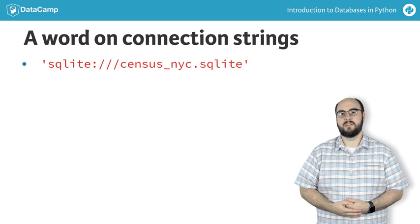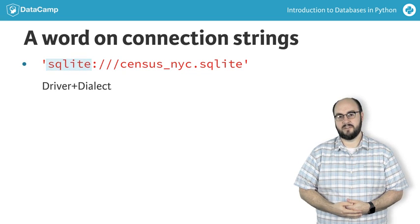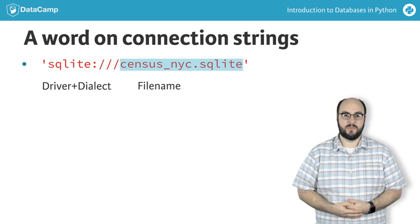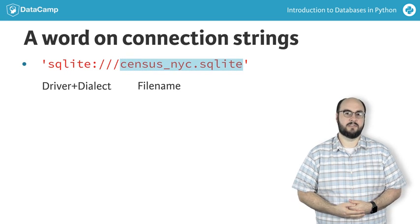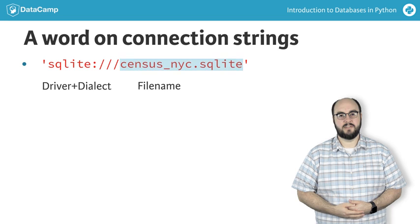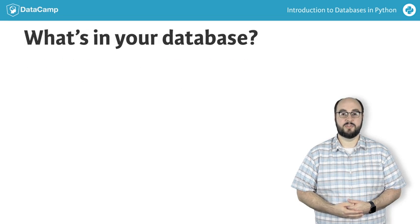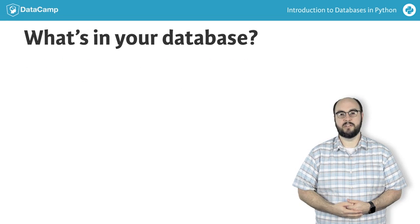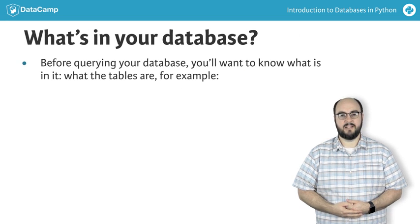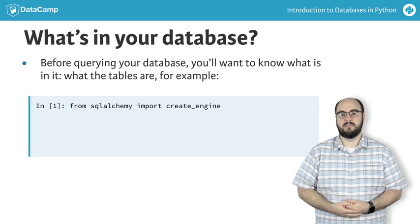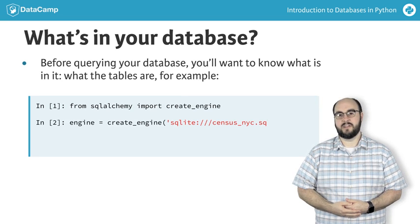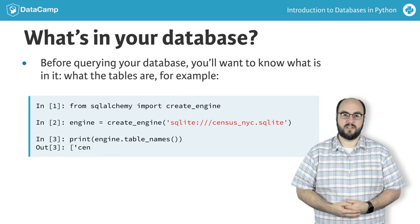In this example, you can see that we're using the SQLite database driver and the database file named census-nyc.sqlite, which is in the current directory. Now that we have an engine and a connection, we need to know what tables are in the database. We'll start by importing the createEngine function and creating an engine to our database. We can then use the tableNames method of an engine, which returns a list of tables.